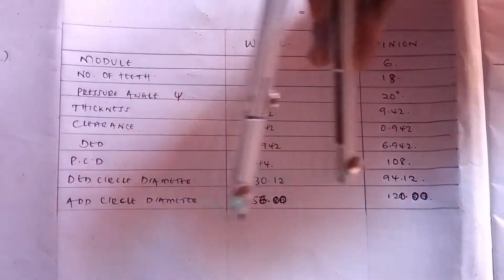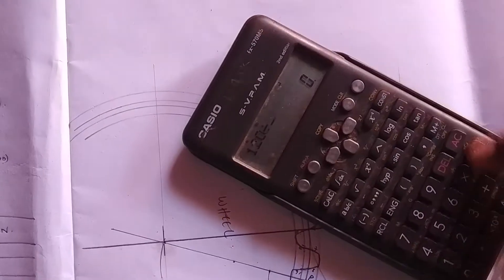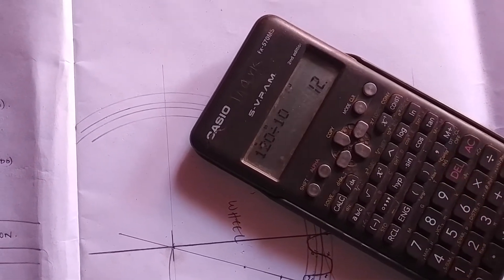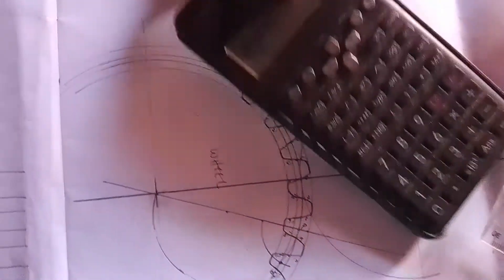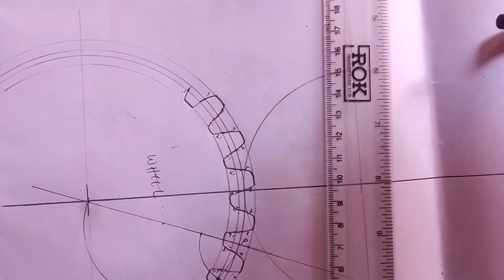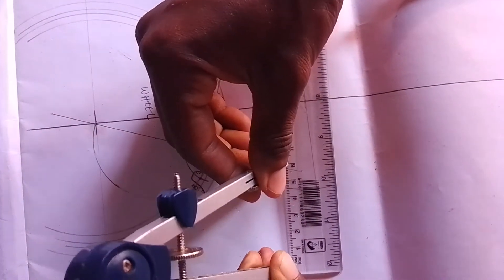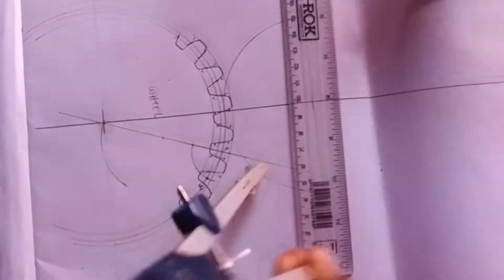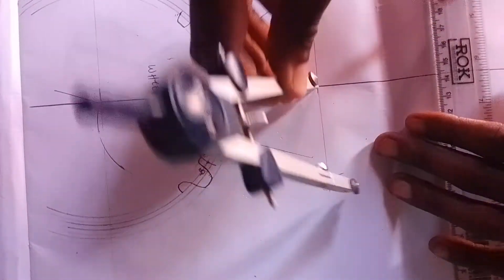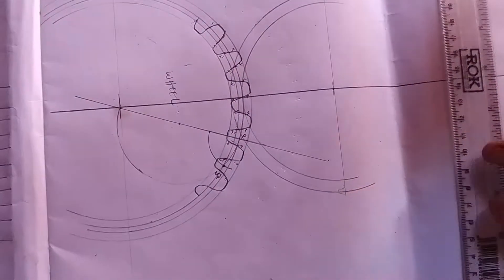You go back to your table and look for the addendum circle diameter. The addendum circle diameter is 120 millimeters. 120 divided by 10 is 12; divided by 2 will be 6. Pick your ruler and measure 6 centimeters. That becomes the addendum. You stand on this point and construct like that — that becomes your addendum.